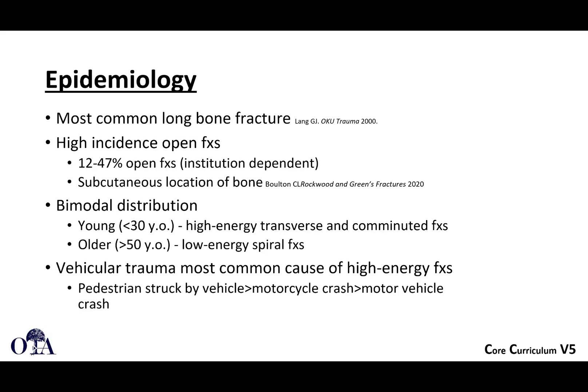Tibial shaft fractures are the most common long bone fracture, with a somewhat high incidence of being open — 12 to 47%. The tibia is a very subcutaneous bone, especially along the medial border, so it will very frequently be open when fractured. There is a bimodal distribution with high-energy injuries in younger patients and lower-energy spiral fractures in older patients. Vehicular trauma is the most common cause of high-energy fractures.